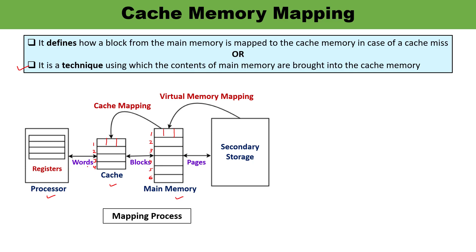There are various registers in the processors and secondary storage is the external storage. Here you can observe cache mapping — copying the data from main memory into the cache is known as cache mapping. And virtual memory mapping is copying the data from secondary storage to the main memory. During cache mapping, a block of main memory — for example block number 2 — is simply copied to the cache, to a specific location. That is what cache mapping is.